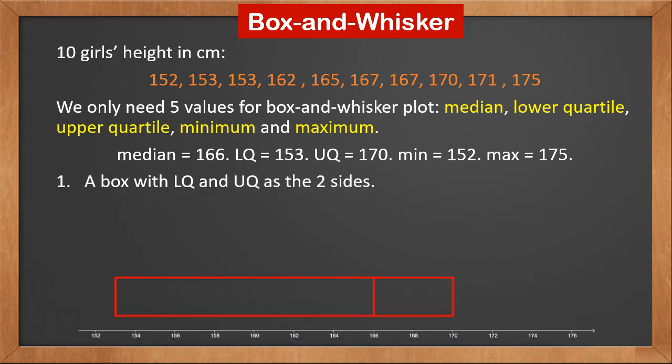Here's the axis. First, we draw a box with lower quartile and upper quartile as the two vertical sides, and a vertical line in the box where the median is. So you can see the box's sides are at 153 and 170, and the vertical line inside is at 166.